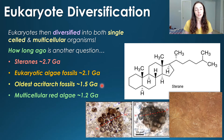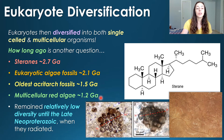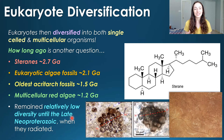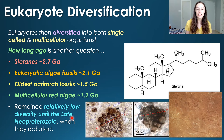Then we have multicellular red algae, which came about around 1.2 billion years ago. However, biodiversity remained relatively low until the Neoproterozoic, around 700 to 550 million years ago, when things really started to kick off in the Ediacaran with the Ediacaran fauna and in the Cambrian with the Cambrian explosion.